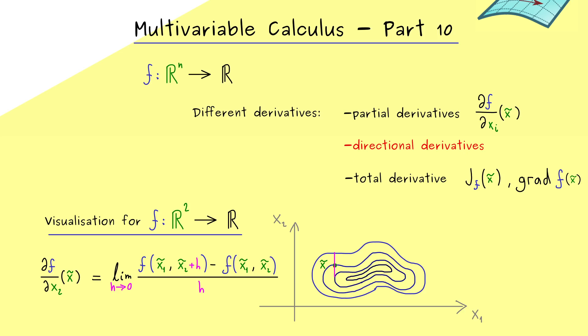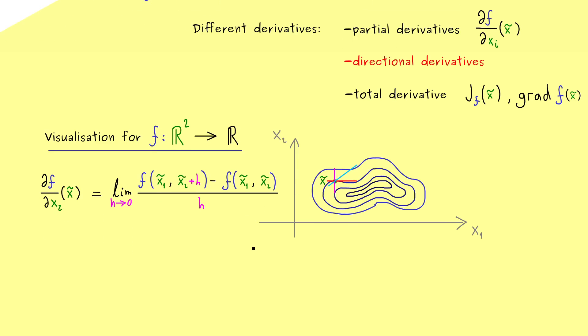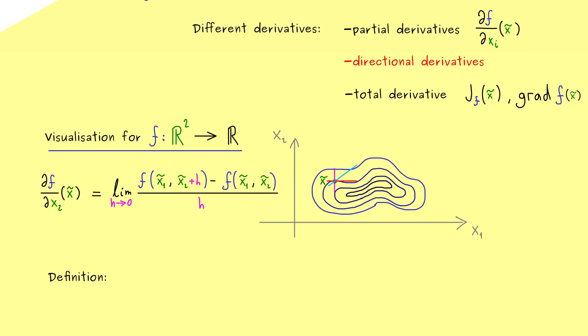We also know the partial derivative with respect to x_1. But now the question should be: can we also look at other directions here in the plane? For example, is it possible to define a derivative with respect to this direction here? Of course, this shouldn't be a problem because also this line here gives us a one-dimensional function again where we can just calculate the ordinary derivative.